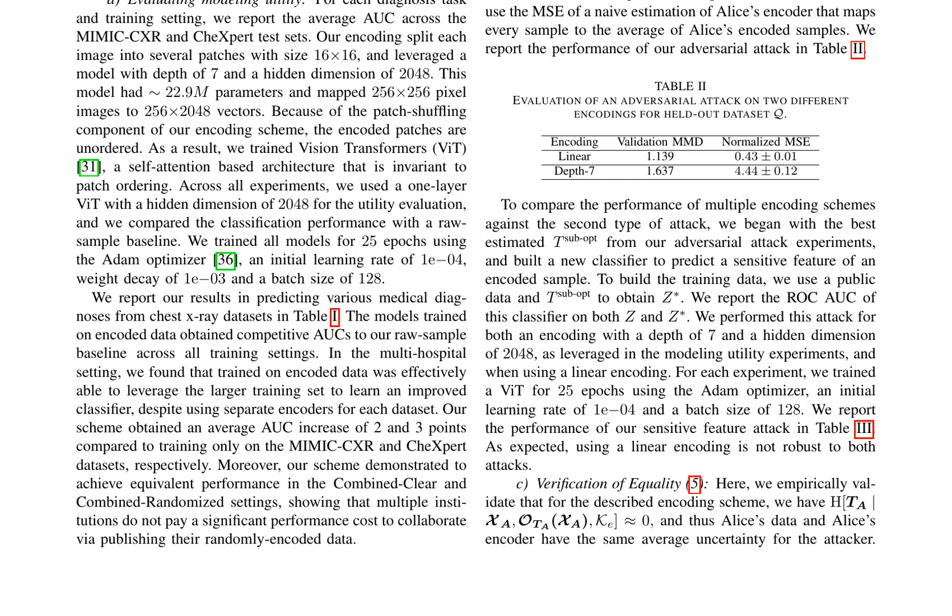Finally, the authors empirically validate that their encoding scheme satisfies a specific privacy property, which means that Alice's data and Alice's encoder have the same average uncertainty for the attacker.